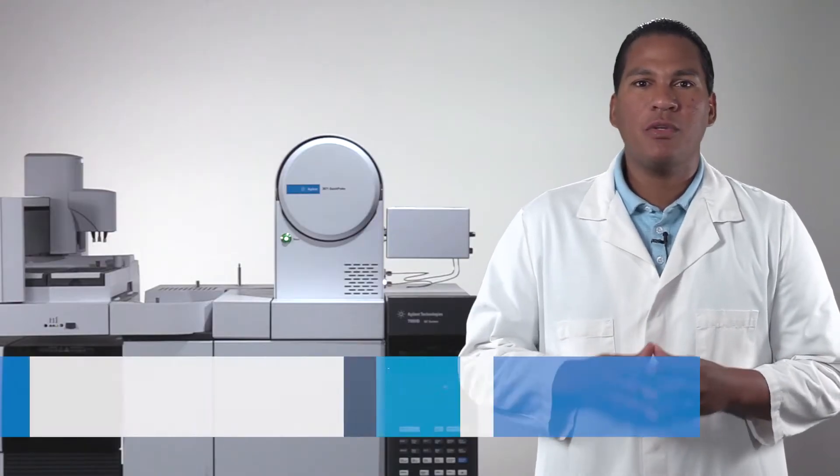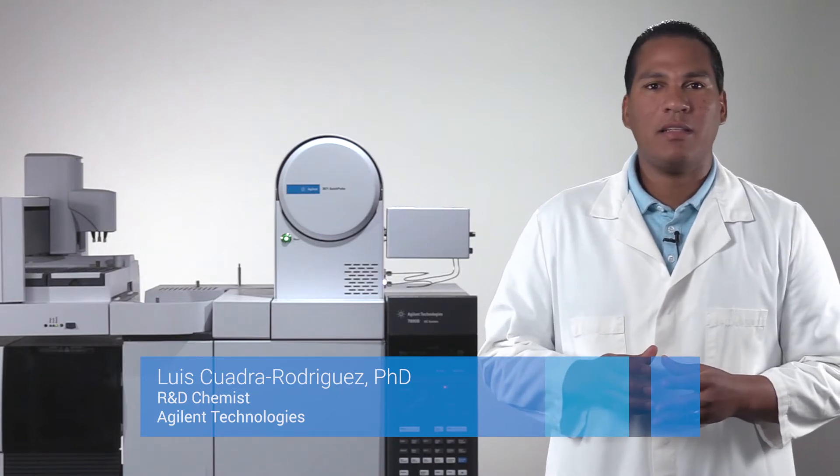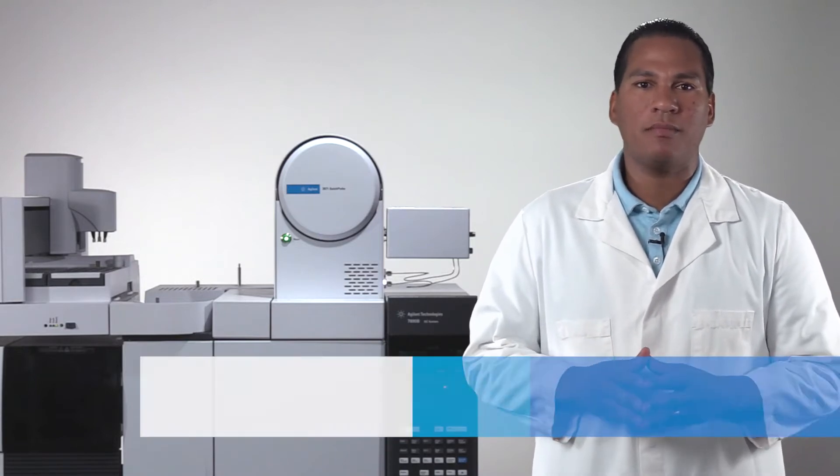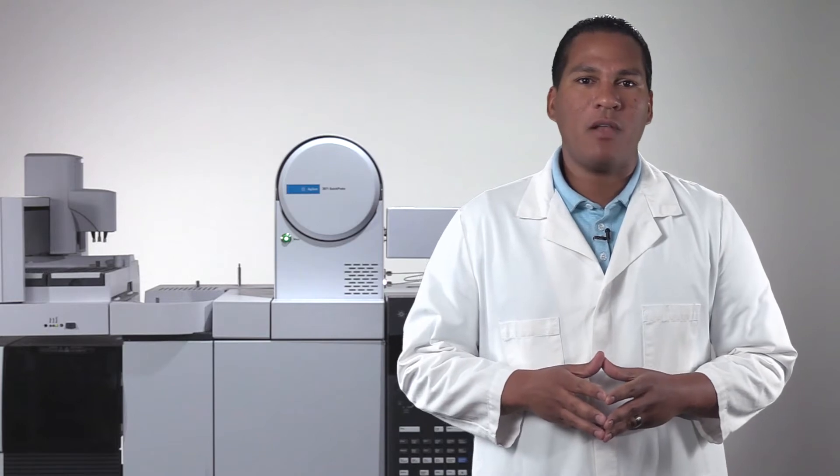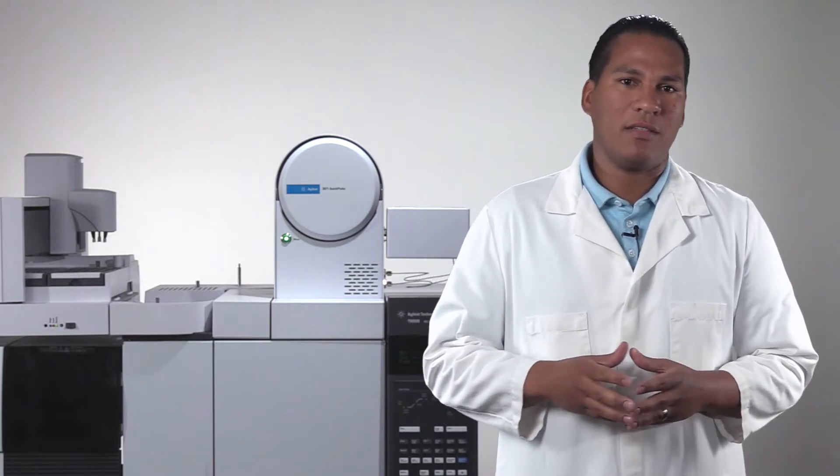QuickProbe includes Agilent's new sample introduction technology that provides rapid heating in the inlet coupled to a short separation column. It interfaces to your standard 7890 or 8890 GC with 5977 MSD for separation followed by quadrupole based mass analysis.